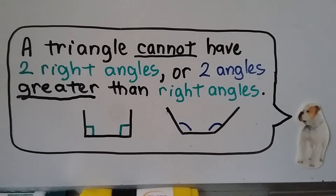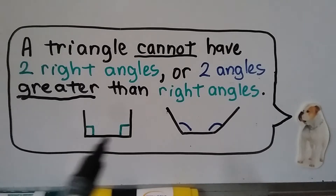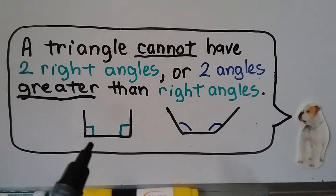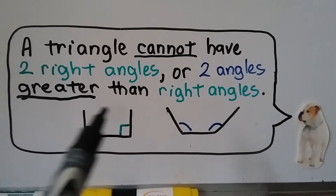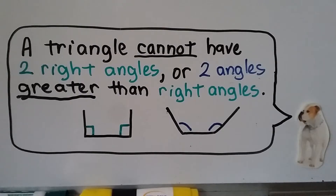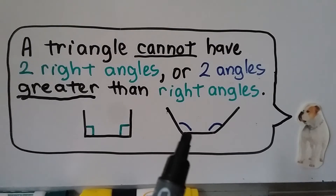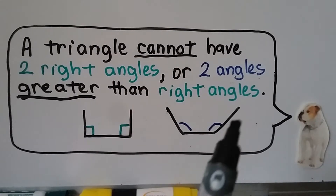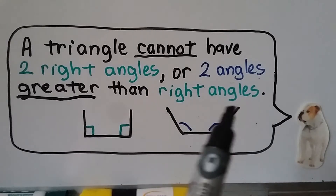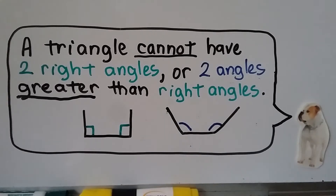A triangle cannot have two right angles — that wouldn't be a triangle. We would need another line to close it and then it would be a rectangle. It also can't have two angles greater than right angles because it wouldn't close — if we did put a line segment there, that would be a trapezoid. So a triangle can't have two right angles or two angles greater than right angles, but it could have one.